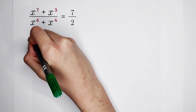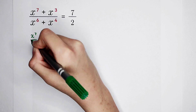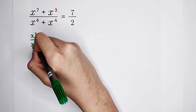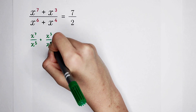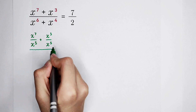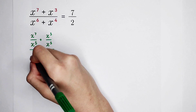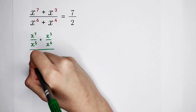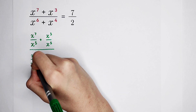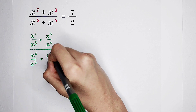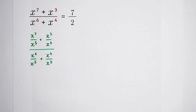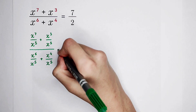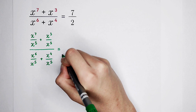So now: x to the power of 7 divided by x to the power of 5, plus x to the power of 3 divided by x to the power of 5 — step by step. The denominator is x to the power of 6 divided by x to the power of 5, plus x to the power of 4 divided by x to the power of 5. This is our left side after dividing by x to the power of 5, which can be simplified further.